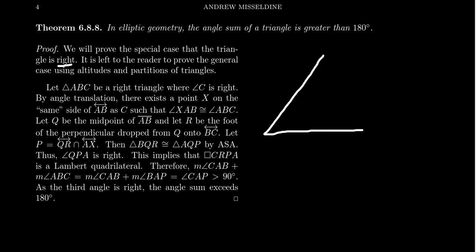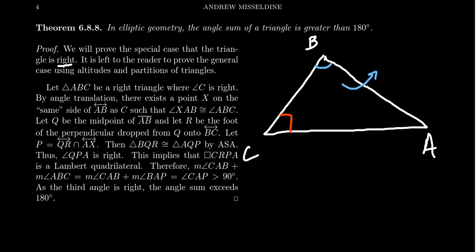Imagine we have an elliptic right triangle with vertices A, B, and C, where angle C is our right angle. We're going to perform the following construction: we take angle B and translate it to the other side of line ABC — the opposite side from C. So there's some point X such that when we look at the ray AX, the angle XAB is congruent to angle ABC.